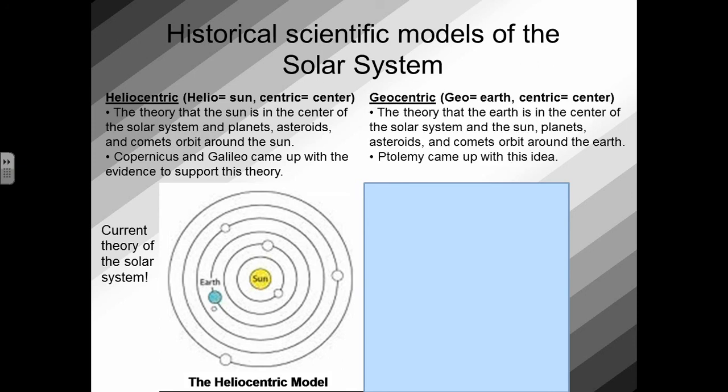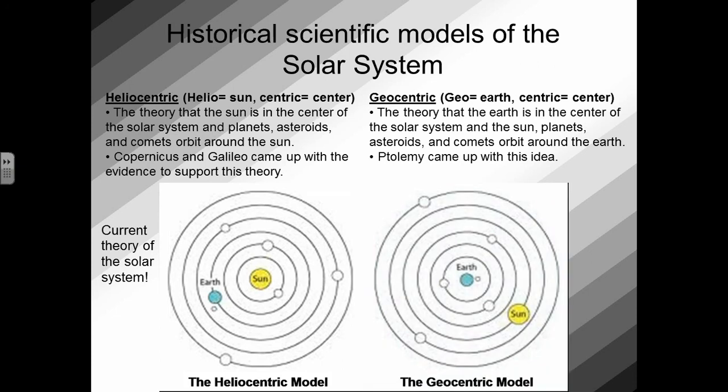Before the heliocentric model, people believed in the geocentric model, which means Earth center. The geocentric model is the theory that the Earth is in the center of the solar system, and the sun, planets, asteroids, and comets orbit around the sun. Ptolemy is a scientist that came up with this idea, and he pictured the solar system looking something like this, showing that the Earth was in the center of the solar system, and all the other planets and the sun orbit around.